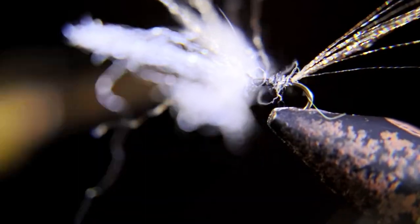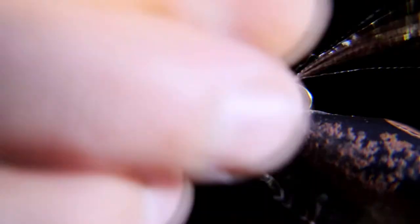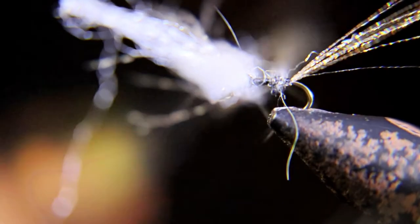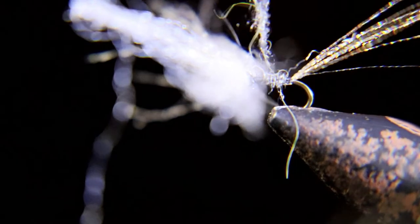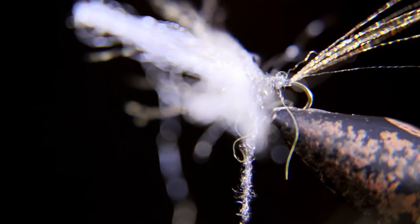Now you can wrap this dubbing right up to the wing. You can put one or two wraps of the dubbing in front of the wing, that's totally up to you. It's definitely not needed.